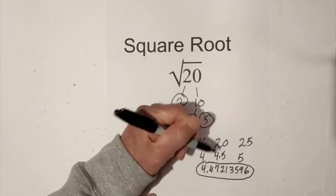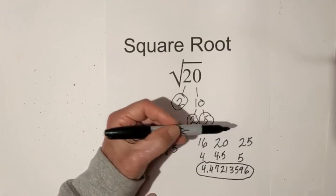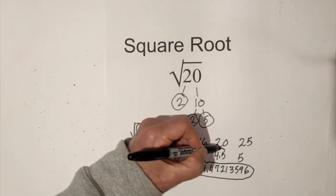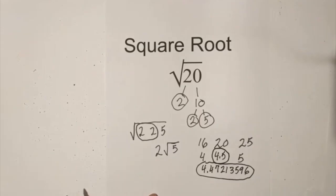So as you can see, if you ballpark it this way, perfect square of 16, perfect square of 25, you can get a pretty good ballpark number of what the square root of 20 is.